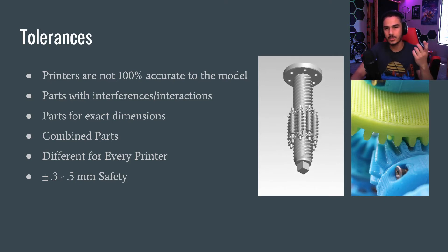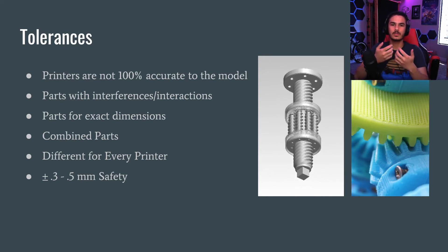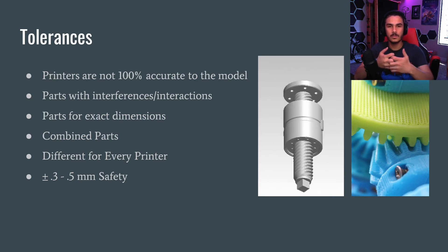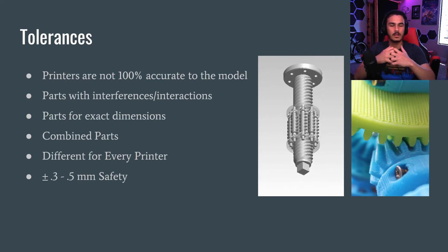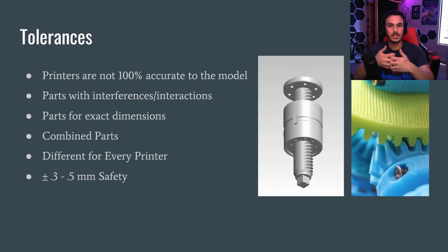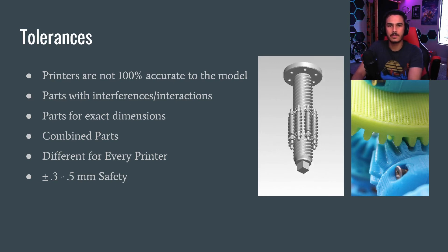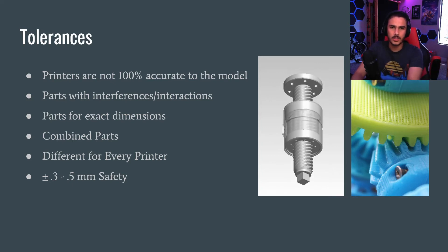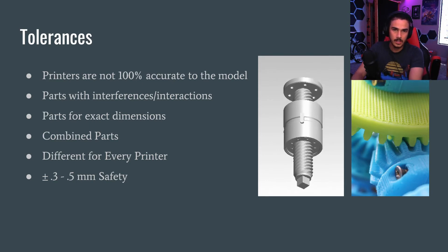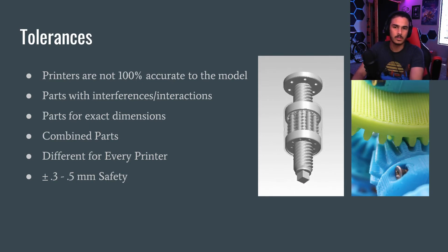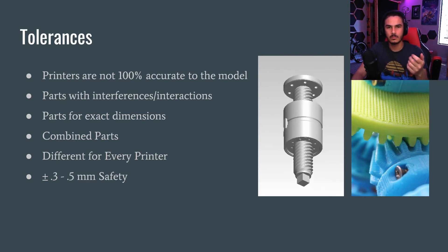ABS does the opposite — it tends to shrink a tiny bit when it's printing. So if you're making two gears out of ABS, you want to make it so that the gears in the program interfere and hit each other a little bit. But when it prints, the model will shrink and the gears will mesh together. So you always want to account for about 0.3 to 0.5 millimeters of safety. When you sign up for the workshop for final training, I will show you what those gauges are.